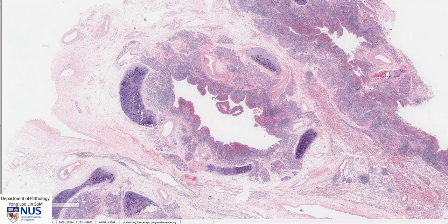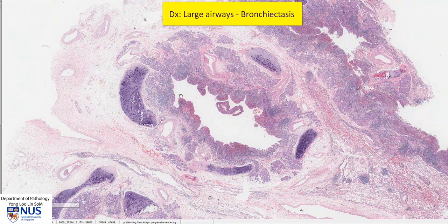Hello, this is a virtual microscopy slide of a case of bronchiectasis. We are looking here at a bronchus. Bronchiectasis is a condition where there is permanent dilatation of the bronchi and bronchioles due to destruction of the smooth muscle as well as elastic tissue in the wall, and this is usually secondary to persistent infection.